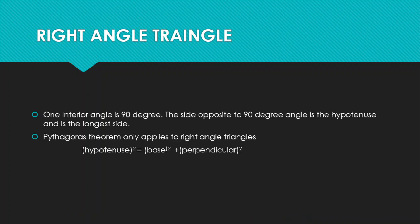Another important triangle is the right angle triangle. In a right angle triangle, one interior angle is 90 degrees. The side opposite to this 90-degree angle is called the hypotenuse, and it is always the longest side.